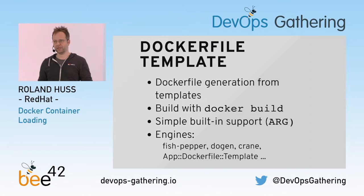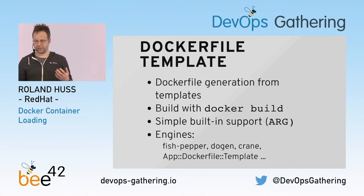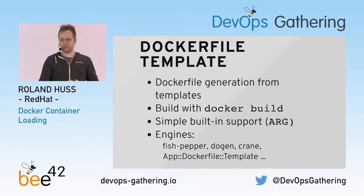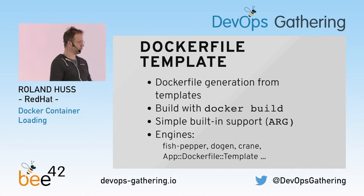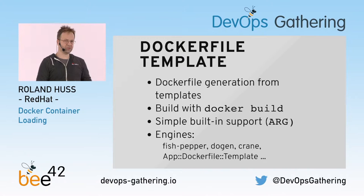Now let's go to some examples of how to solve these problems. One approach is called Dockerfile templates. This technique is quite easy to understand: you have a set of templates and you create Dockerfiles out of these templates — it's a sort of pre-processing step. There's simple built-in support with build args, but there are also a lot of external engines which you can use to create these kinds of Dockerfiles.